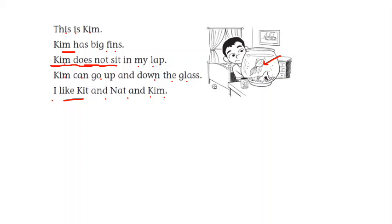Kim can go up and down the glass. I like Kit and Nat and Kim. Now I just want to ask you a question here. Why doesn't Kim sit in Jim's lap? This will be a question that I will ask you when we come back to school, and the one who answers the question is going to get a mint and a point in the application. So my question is, why doesn't Kim sit in Jim's lap, just like the cat?